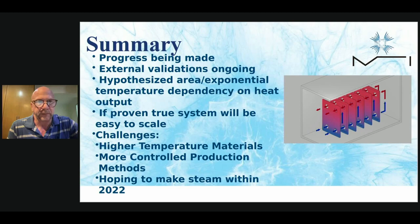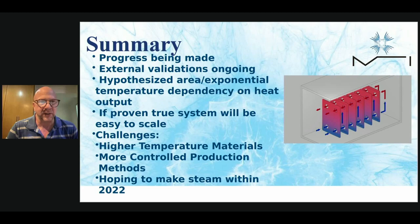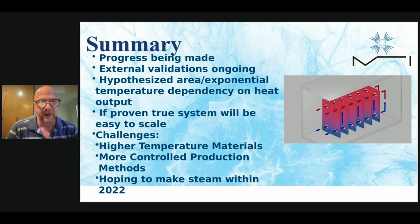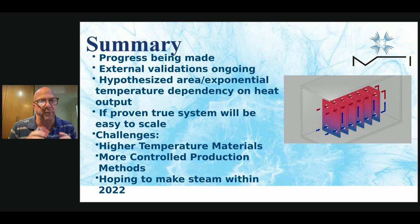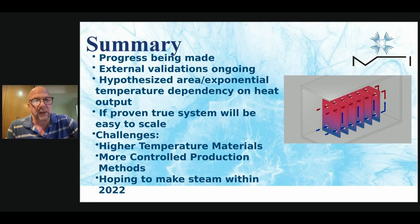To summarize — I apologize this is brief as we have a short window. Progress is being made. The technology is moving forward. We have external validations, including one from a major electronics manufacturer with an excellent engineering team doing validations as we speak. The working hypothesis is that excess heat is proportional to the surface area of the catalyst, and there is an exponential relationship between working temperature and excess heat output. If these hypotheses are proven true in the next-generation devices we're building, this system would be quite easy to scale — we simply need to improve surface area, and there are different known ways of doing that.